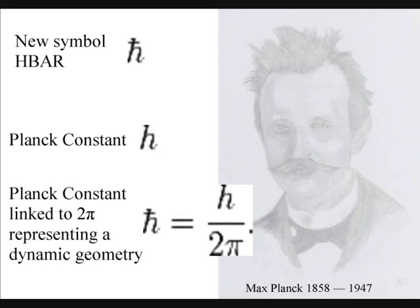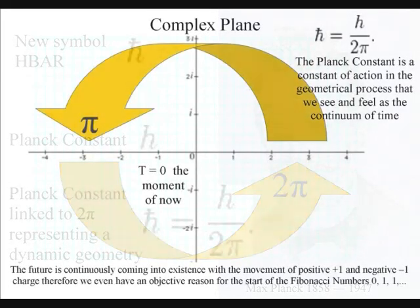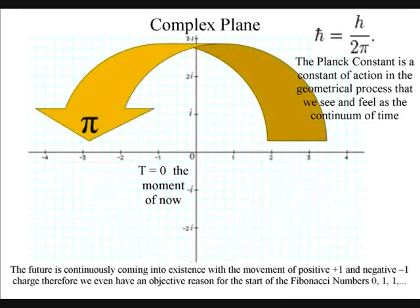If we start at the smallest scale with the Planck constant, we find it is very often linked to 2π. This happens so often in quantum mechanics that a new mathematical symbol was created called h-bar to represent the Planck constant divided by 2π. In this video, instead of making new mathematical symbols, we are going to explain a geometrical process that the maths is based upon.